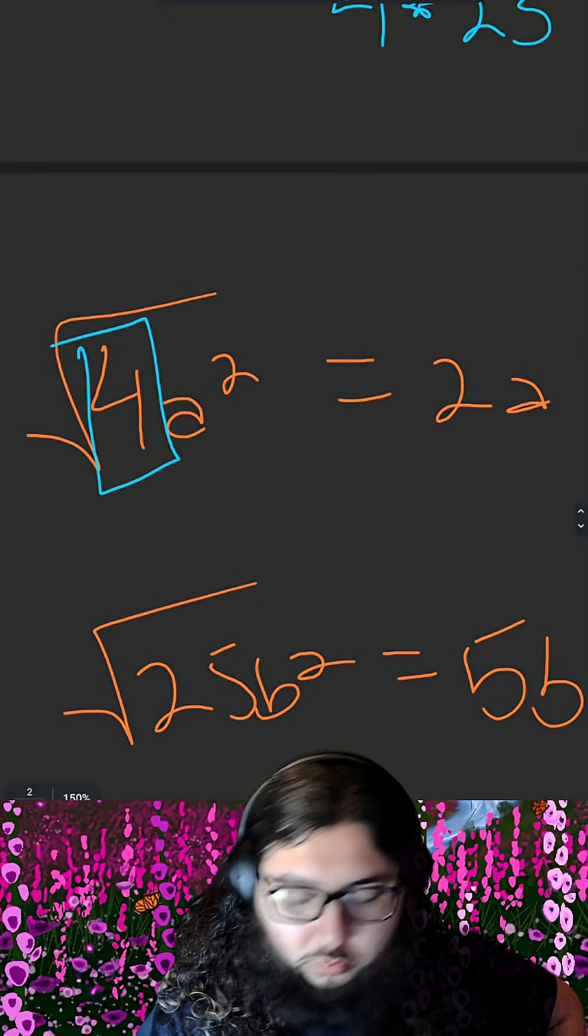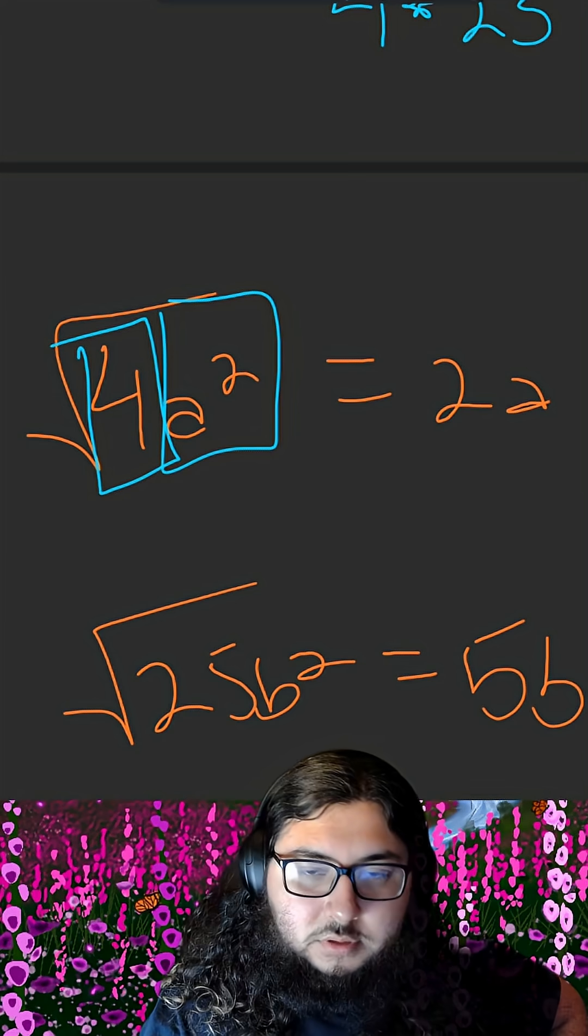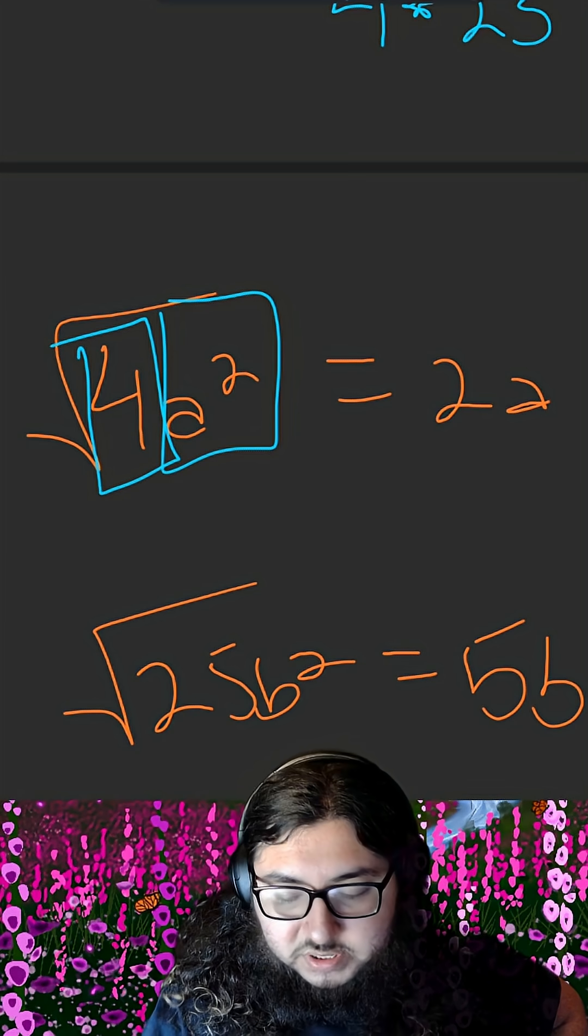How do we get this result? The square root of 4 is 2, and the square root of A squared, well, those are just opposite operations. So that's just A.